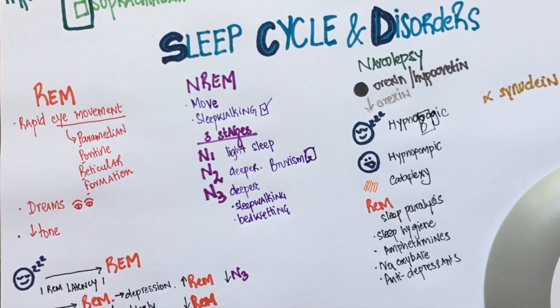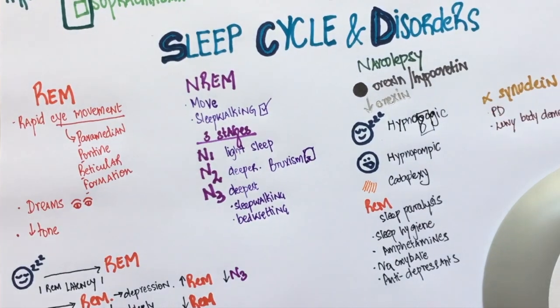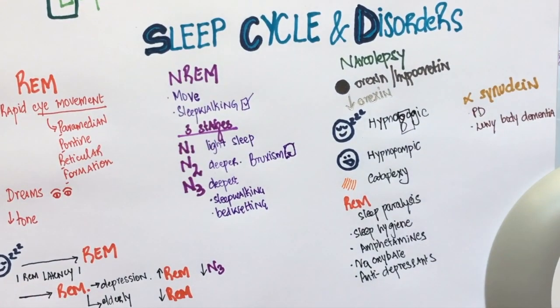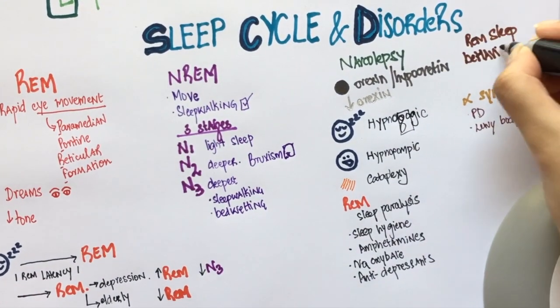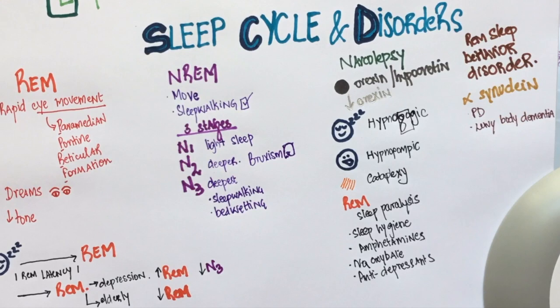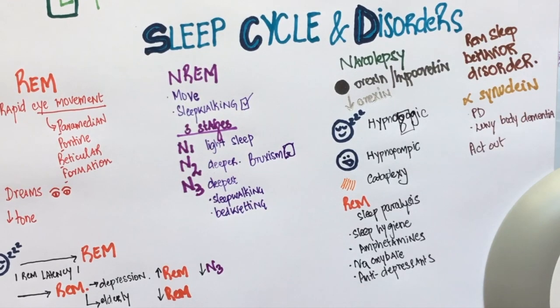Alpha-synuclein is a protein which is deposited in the brains of people with Parkinson's disease and Lewy body dementia. It is associated with REM sleep behavior disorder.